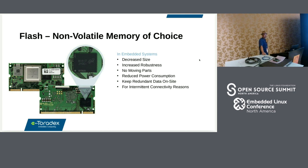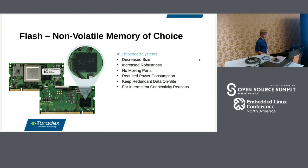Flash is pretty much the non-volatile memory of choice nowadays. For embedded systems, it helps decrease the size, increase robustness because there are no moving parts, and also reduce power consumption. But why would one even want non-volatile storage at the edge? You probably want to keep some redundant data on site — for example, if you have any kind of intermittent connectivity problems, you still keep your data there. That's why it's ever-increasing in size and importance for IoT.